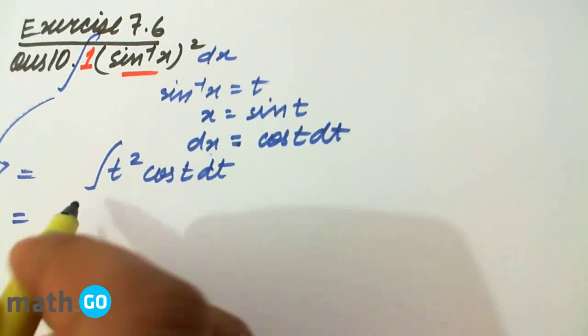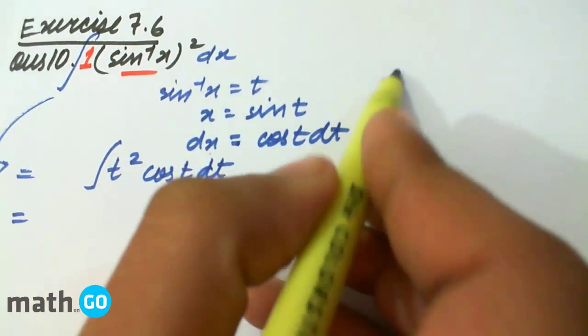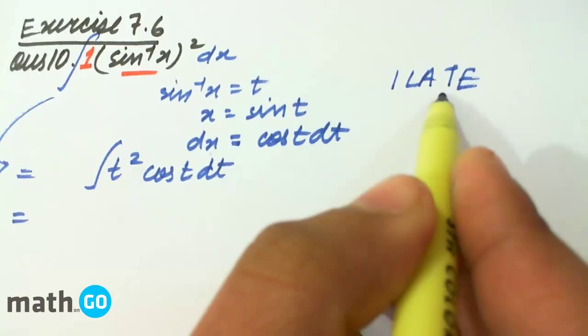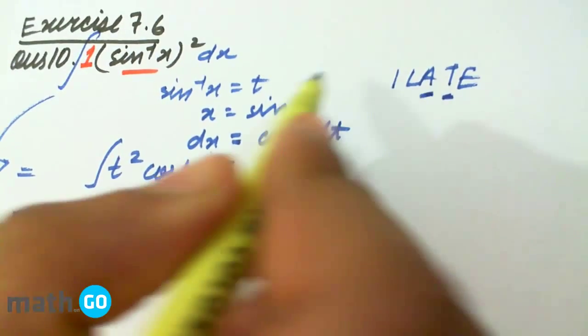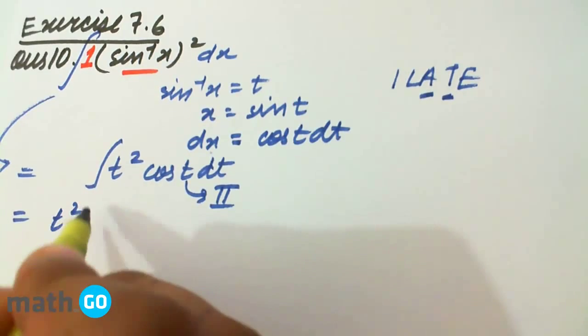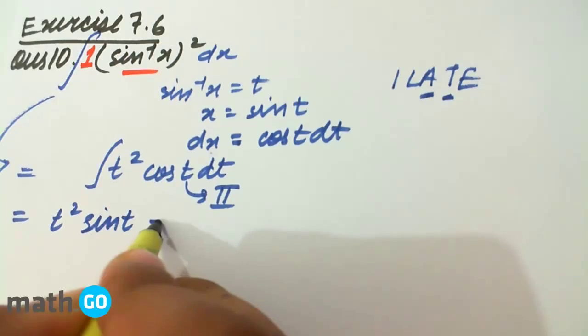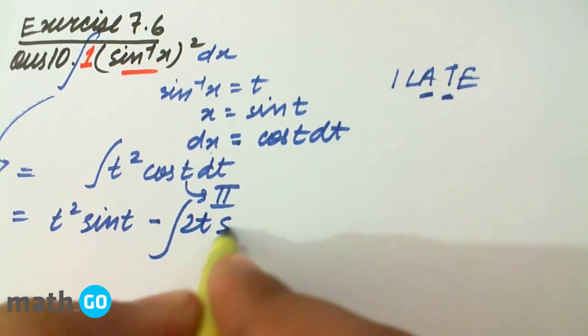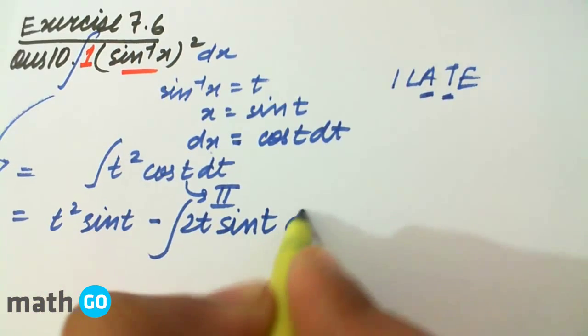Now according to I-LATE, this is the trigonometric function, this is the algebraic function, so obviously this has to be kept the second function. So cos t, the integral is sin t, minus the derivative that is 2t sin t dt.